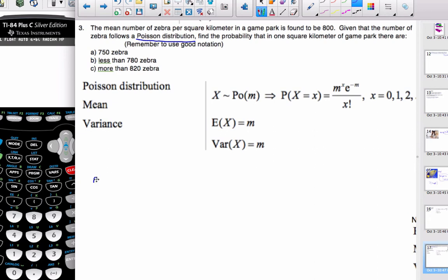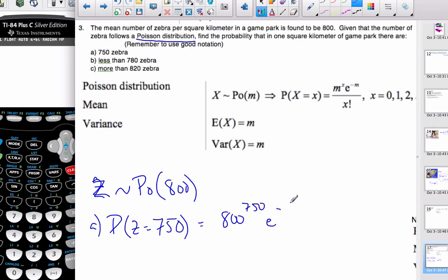With every probability question, we must first define our variables. Zebras follow a Poisson distribution, Z ~ Po(800), where the parameter m equals 800, the average number. For part a, we want the probability that Z equals exactly 750. I could plug this into the formula: 800^750 times e^(-800) over 750 factorial. I can throw this in my calculator, and it will blow up.